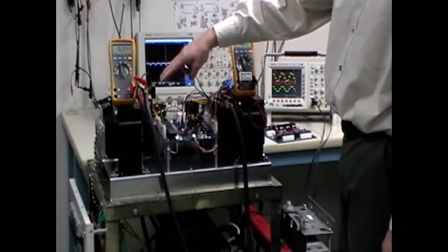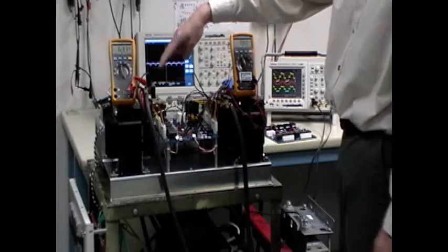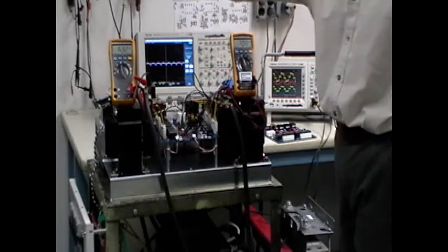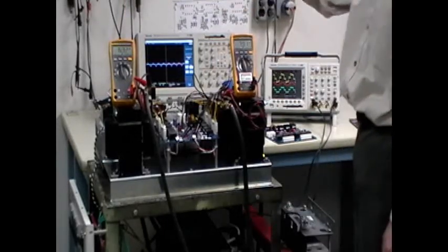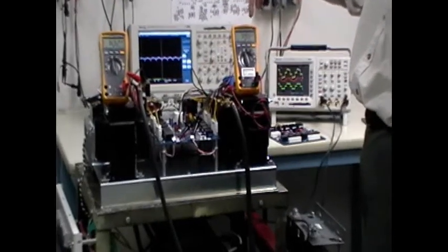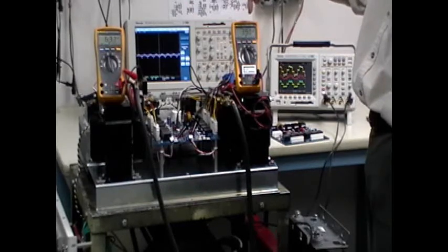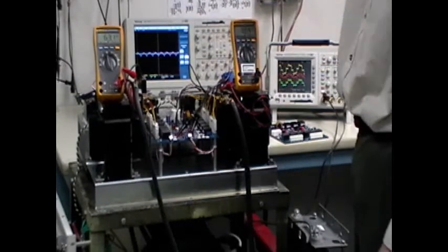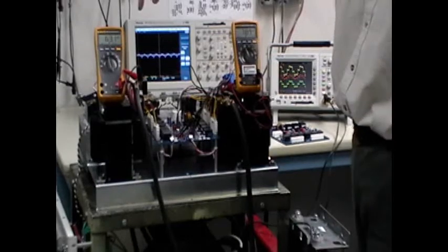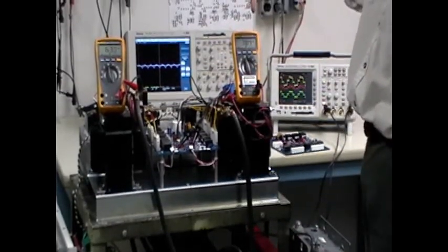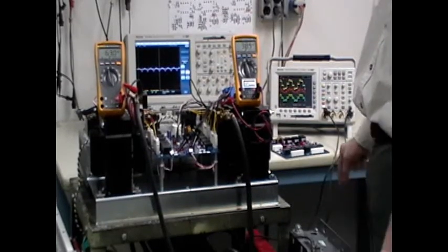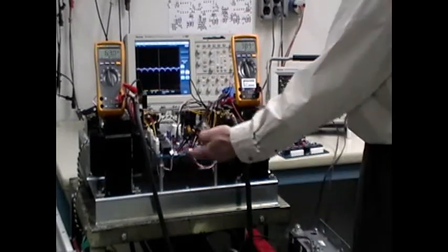We have the 50 millivolt 100 amp shunts here. So the scaling is 50 millivolts is 100 amps. On the meter, we have 63.2 millivolts, which is about 126 amps. And here we have 39 millivolts, which is 78 amps. That's about 48 amps difference out of 200. So we're talking about a 24 percent mismatch in current without any feedback.